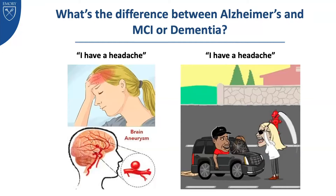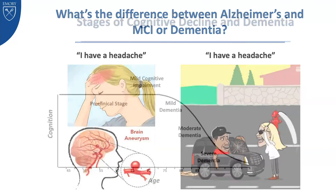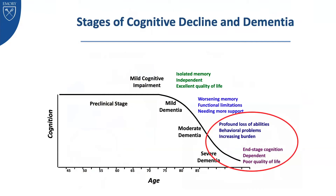When we say somebody has dementia or memory loss, that's just a symptom like having your head hurt — it's not saying what's causing that problem to occur, the memory loss or the dementia symptoms. There are lots of different things that can cause cognitive problems, memory loss, and dementia. But if it's due to a degenerative process, something that's going to get worse over time, they all follow a similar course.